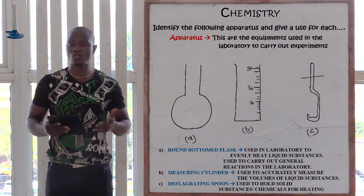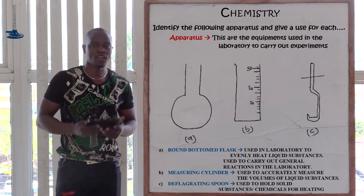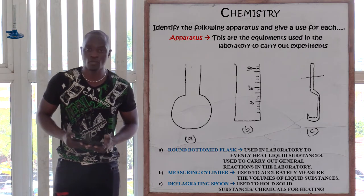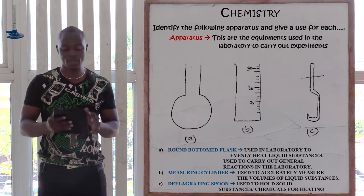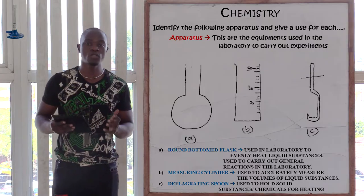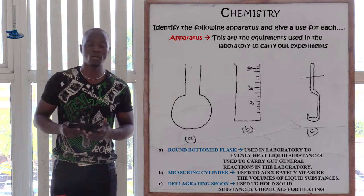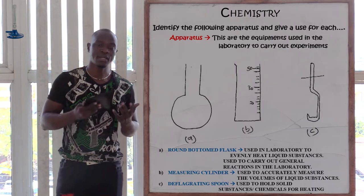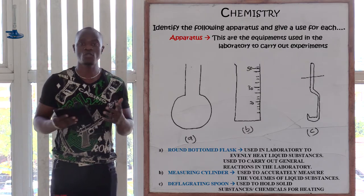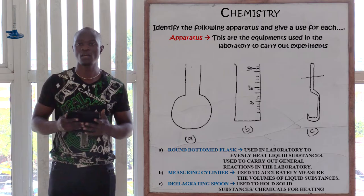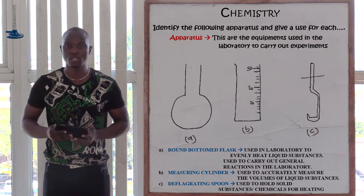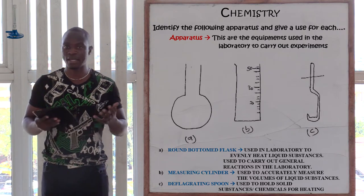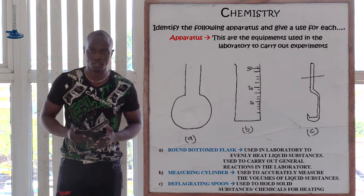The first apparatus we have is the round-bottomed flask. Apparatus A is the round-bottomed flask. It is used when you want to evenly heat liquid substances. It is also used for general experiments like carrying out certain reactions.